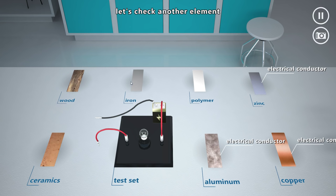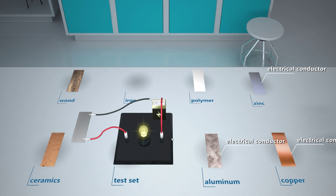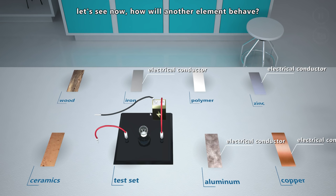Now let's check another element. Pure iron is a shiny, silvery, very hard and relatively refractory metal that conducts electricity. Let's see now. How will another element behave?